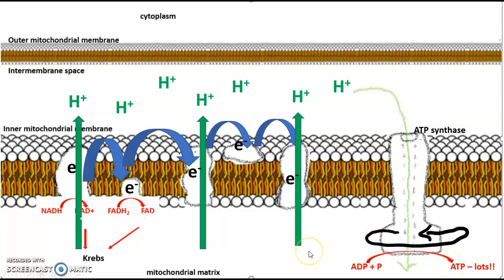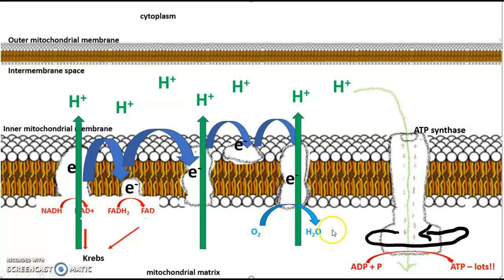We still have one more concept to cover. The final electron carrier is holding on to an electron and can't accept a new one from the previous carrier until it gets rid of it. That is the role of oxygen in this process. Oxygen is very electronegative and picks up this electron from the final electron carrier in the chain. When it picks up that electron it becomes negatively charged, so it also picks up a hydrogen from the mitochondrial matrix to form water. Oxygen is what we call the terminal or final electron acceptor.